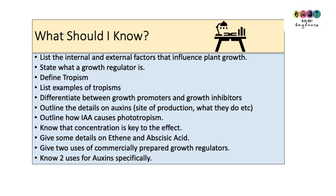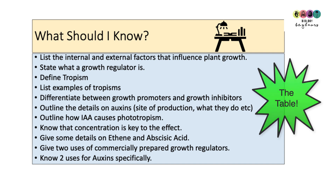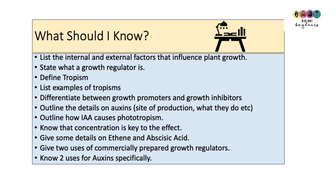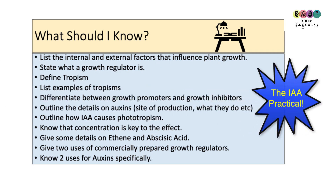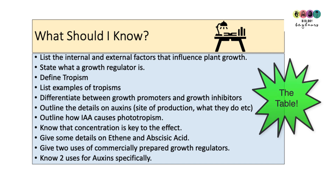By the end of this video you should be able to: list internal and external factors influencing plant growth; define growth regulator and tropism; give examples of tropisms and define each one; differentiate between growth promoters and inhibitors using the table; outline how IAA causes phototropism and understand that concentration is key; give details on ethene and abscisic acid; and give two uses of commercially prepared growth regulators, knowing specific uses for auxins.